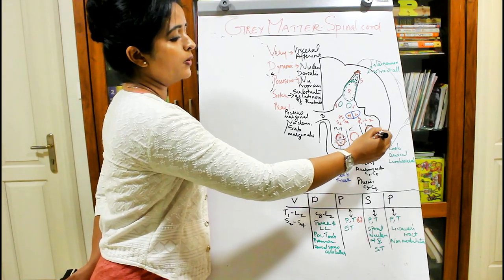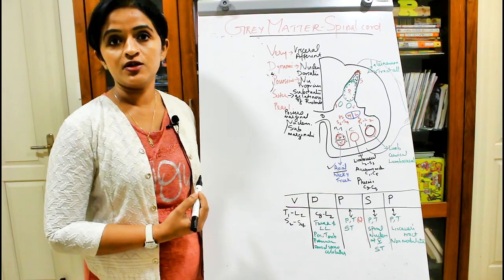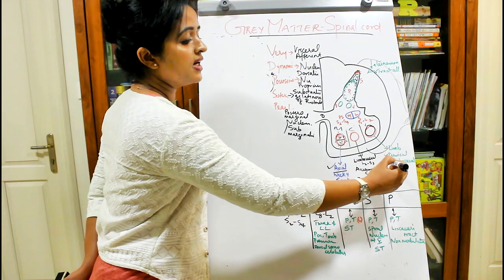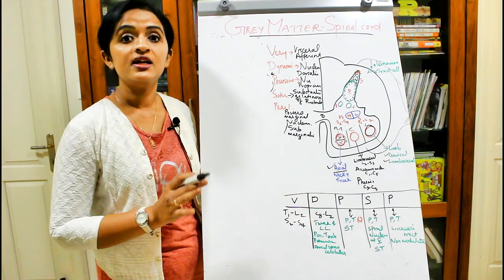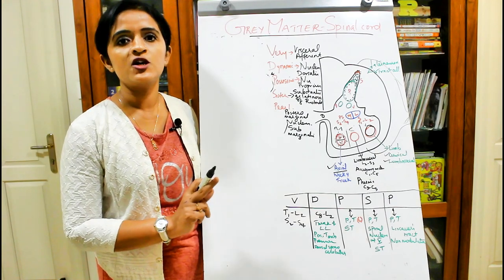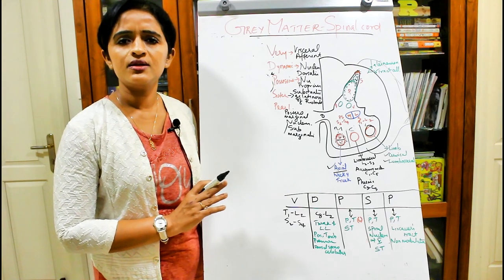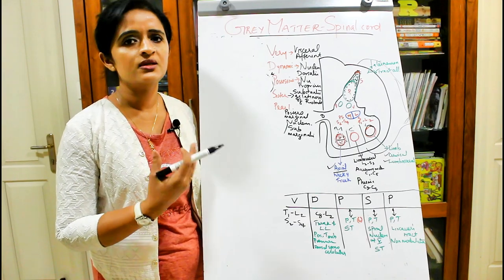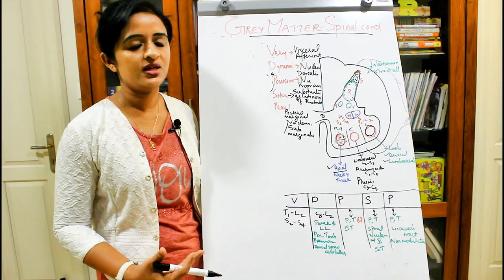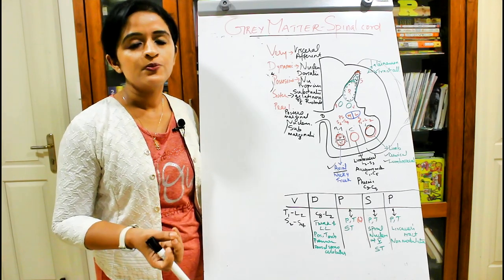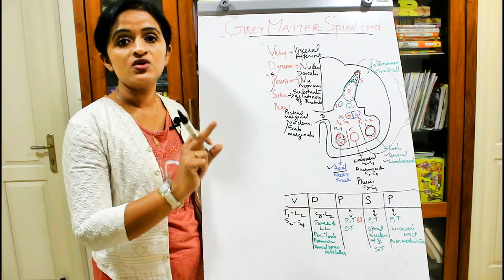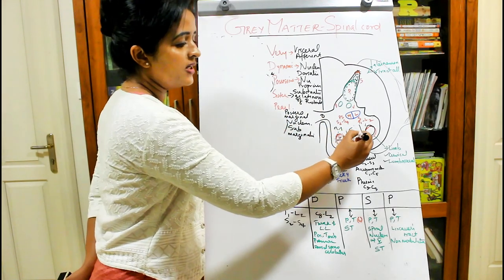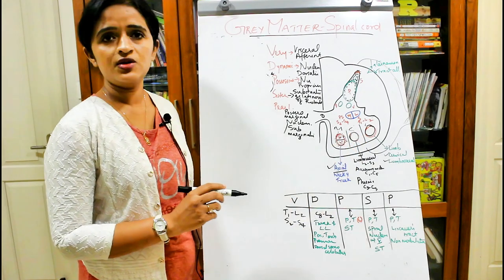The lateral group is confined to the cervical and lumbosacral regions only — not seen throughout the spinal cord. This is because they supply the limb muscles, and limb supply comes from the cervical plexus, brachial plexus, and lumbosacral plexus. So only in those two regions do you need this lateral group of neurons.